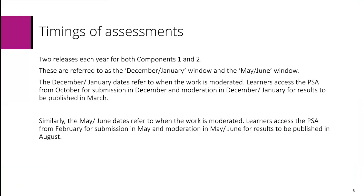Timings of assessment. There are two releases each year for both Components 1 and 2. These are referred to as the December-January window and the May-June window. The December-January window dates refer to when the work is moderated. Learners access the Pearson Set assignment from October for submission in December, and then it's moderated in December and January for results to be published in March.